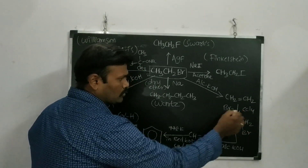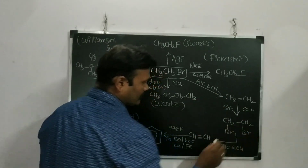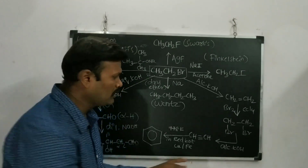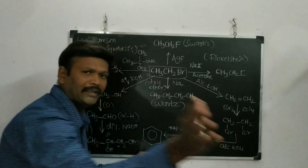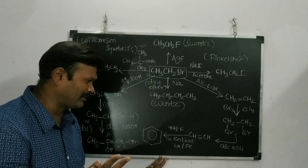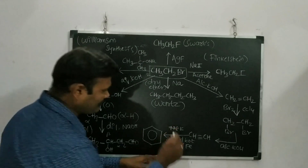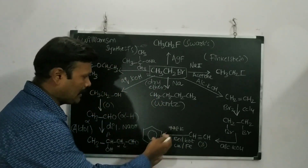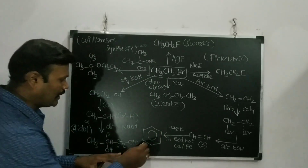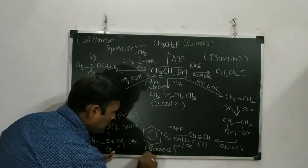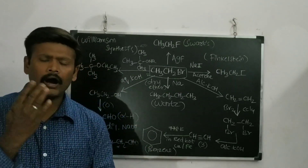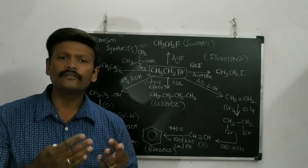Ethyl bromide is converted to ethylene using alcoholic KOH. Ethylene then reacts with Br2 in CCl4 as solvent to give 1,2-dibromoethane. Adding alcoholic KOH again causes dehydrohalogenation — the halogen and hydrogen are eliminated twice — giving a triple bond, yielding acetylene. Then 3 moles of ethylene, passed over red-hot copper or iron at 778 K, give benzene as the product. Most aromatic naming reactions start from benzene.